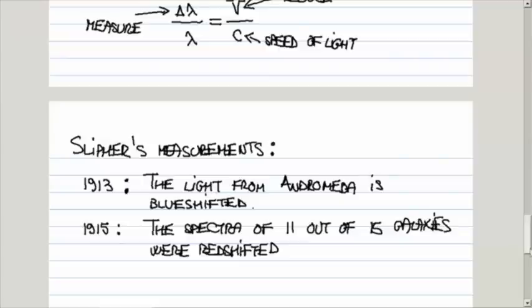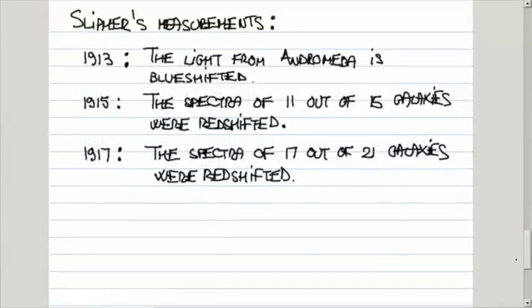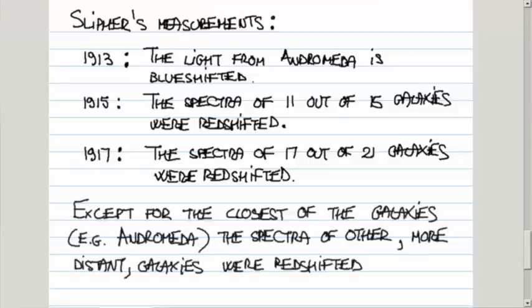Then in 1917, he had more data, and he established that 17 out of 21. Except for those galaxies that are very close to us, like Andromeda, the spectra of virtually all other galaxies are redshifted. He knew that they were more distant because if the source of light is more distant, it's less bright. He knew that these things are more distant, those whose spectra are redshifted.